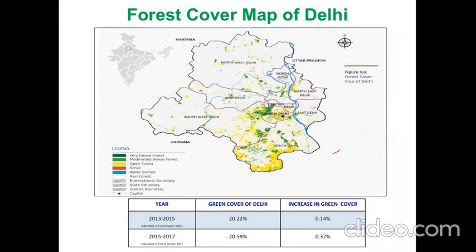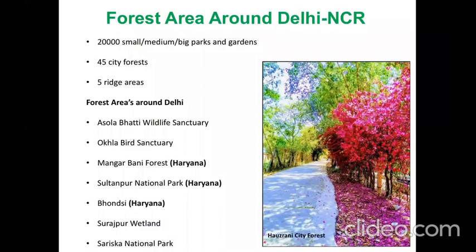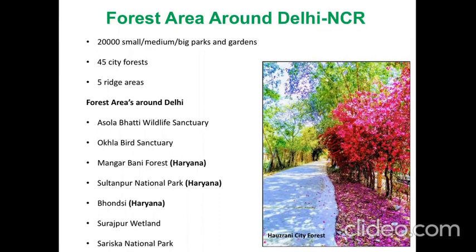We have a lot of gardens — small, medium, and big — numbering more than 20,000. We have what we call city forests, numbering 45, which are big and small forest areas that are not manicured. We have five very big ridge areas constituting the Aravallis. Some of the forest areas around Delhi include Asola Bhatti Wildlife Sanctuary, the Okla Bird Sanctuary wetland, the sacred forest Mangarbani, Sultanpur National Park, city forests like Gonsi, Surajpur wetland, and Sureska National Park. All of this contributes to the diversity found in the Delhi NCR area.